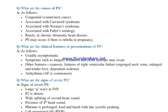What are the clinical features of pulmonary stenosis? Usually the patient is asymptomatic. Symptoms such as fatigue, weakness and effort syncope may occur. Other features include cyanosis, features of right ventricular failure — engorged neck veins, large and tender liver, dependent edema — and arrhythmia, of which atrial fibrillation is the commonest.